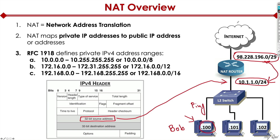When the internet device sees that traffic, it actually sees the IP address of the external side of our router. It never sees that the traffic actually came from inside the router. It assumes the traffic came from the outside of the router and is able to respond back.